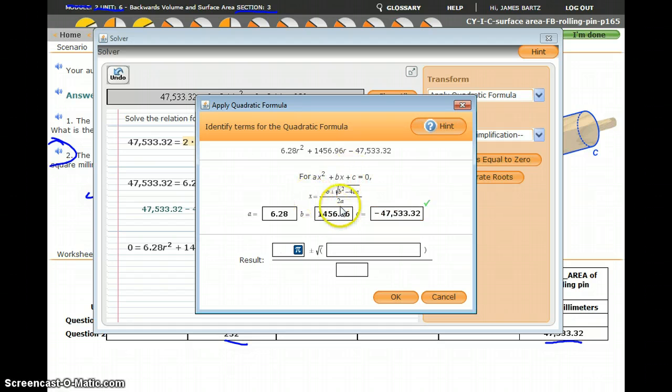Now you can see the quadratic formula is listed, and so it says negative b, so I have b which is 1456.96, so I need negative 1456.96.